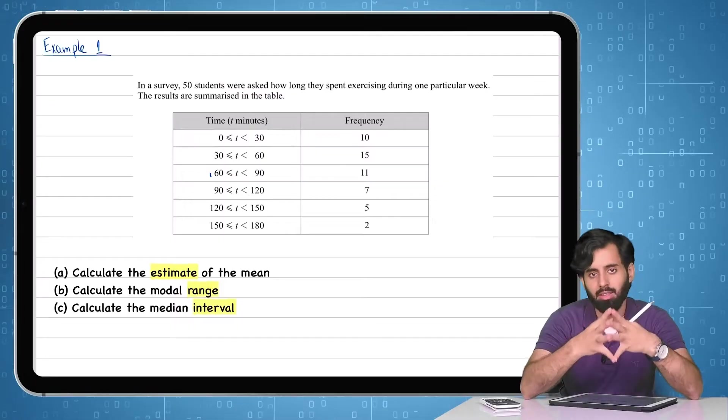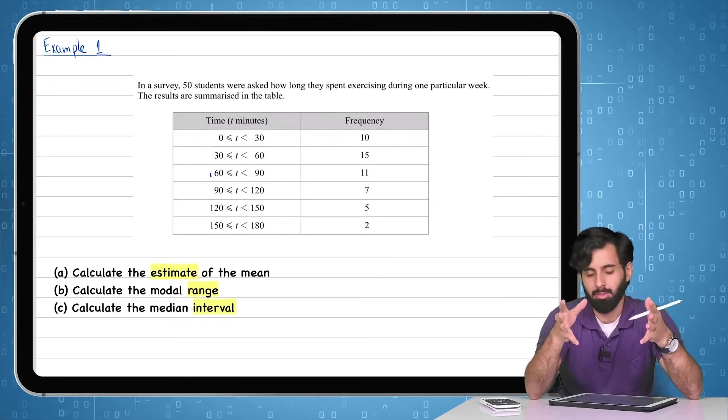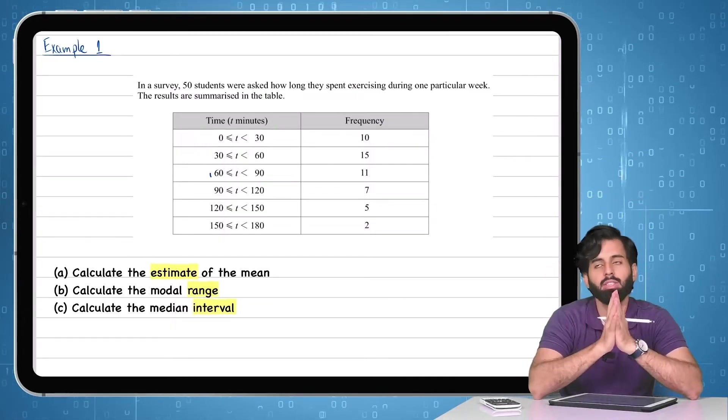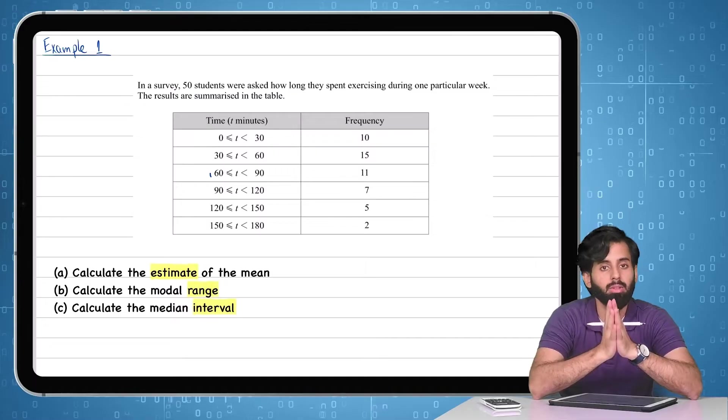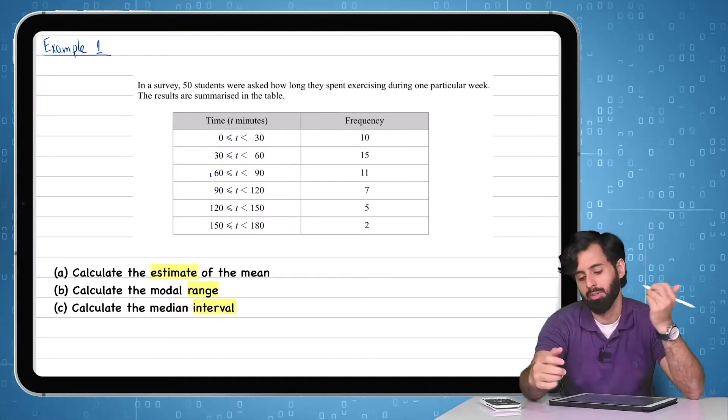Instead, the easier way is to classify them into groups, and that's exactly what has been done here. Now, the question will not ever ask you to calculate the mean. Instead, it's going to ask you to calculate the estimate of the mean, and that's exactly what we're about to do now.